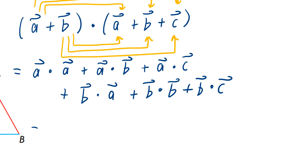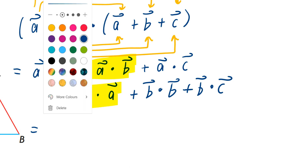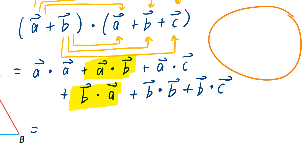When it comes to vectors, there are important properties to think about. One of them is called the commutative law. The commutative law means order doesn't matter — so a dot b and b dot a are the same. Let's write that down: a dot b equals b dot a.